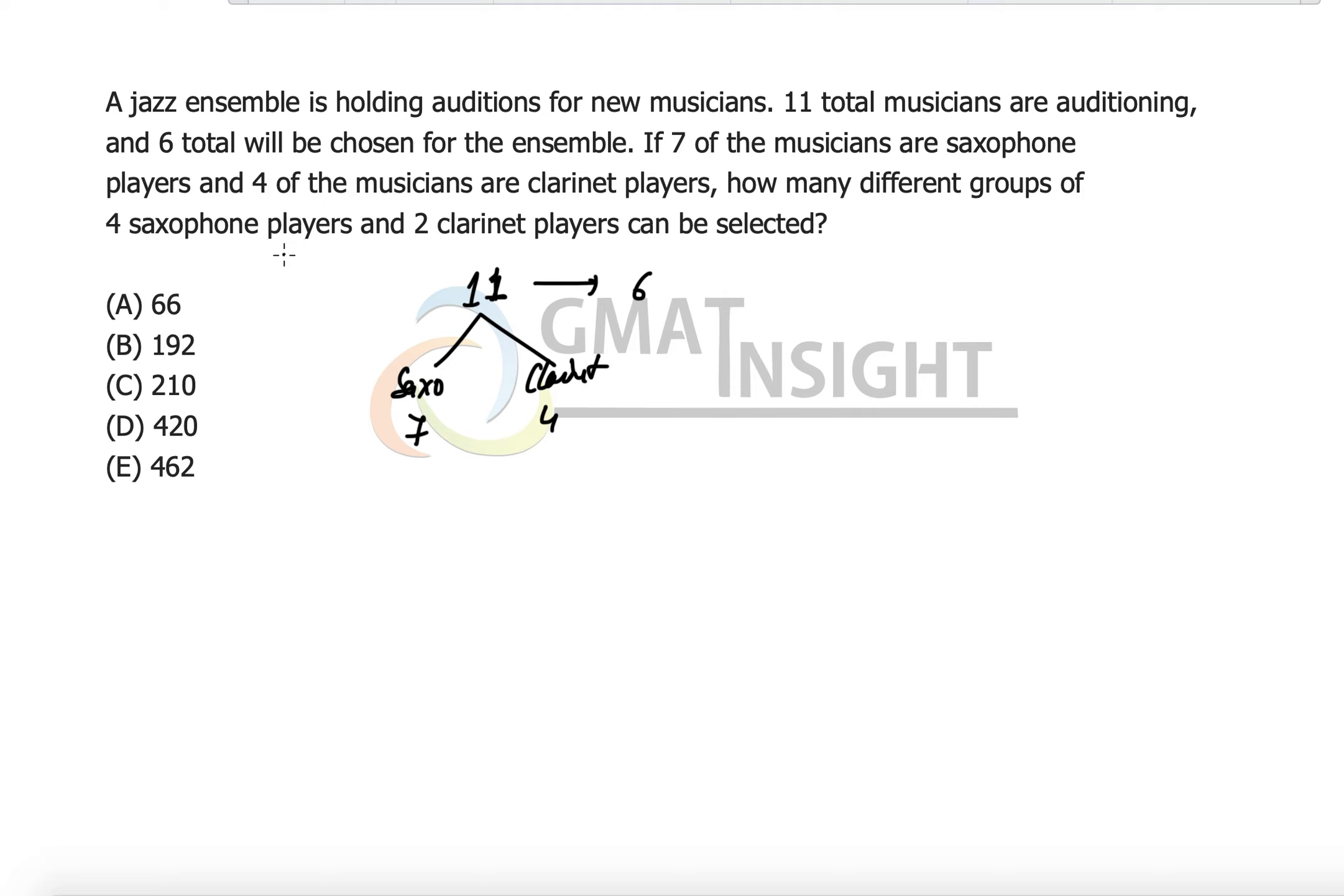Now the question is: how many different groups of four saxophone players and two clarinet players can be selected? It's a plain selection question in which we need six total, and out of these six we need four playing saxophone and two playing clarinet.